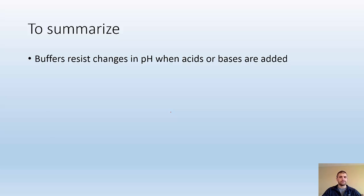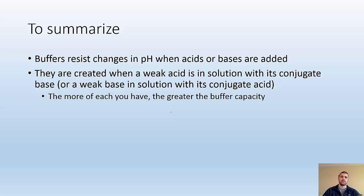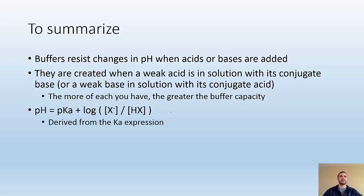To summarize: buffers resist change to pH when acids or bases are added. They are created when a weak acid is in solution with its conjugate base, or a weak base with its conjugate acid. The more of each you have, the greater the buffer capacity. Here's the Henderson-Hasselbalch equation — make it your friend. It's derived from the Ka expression; know when to use it and know what each variable represents. Hope you found that helpful. I'll see you in class.